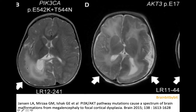Hemimegalencephaly is not always one full hemisphere. It might also affect only part of a hemisphere, and in that case it is still called hemimegalencephaly — again with a mutation in the mTOR pathway. Or it might involve one entire hemisphere and a little bit of the other hemisphere, and in that patient there was also a mutation in the mTOR pathway.